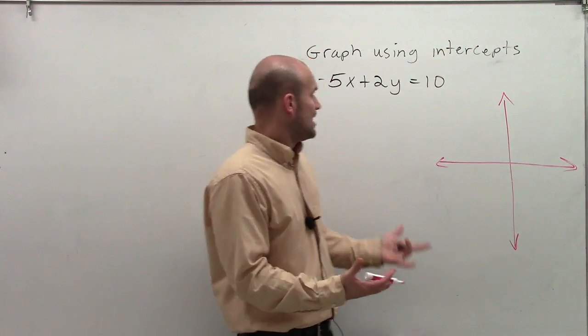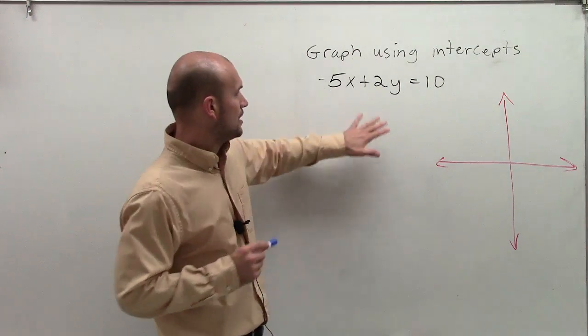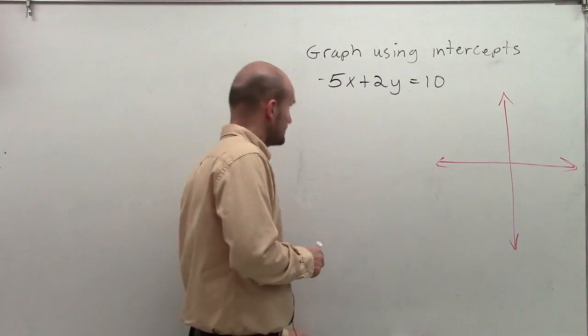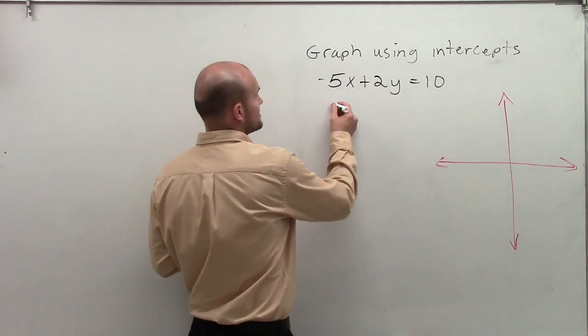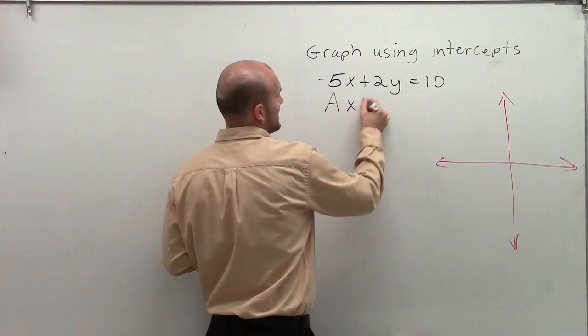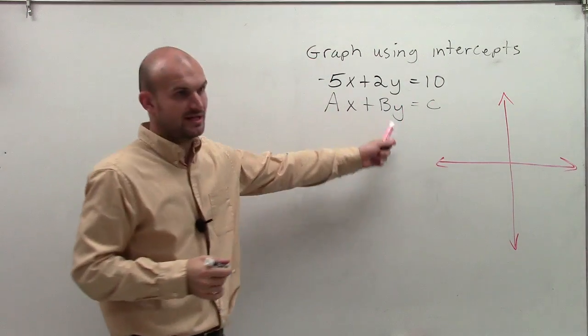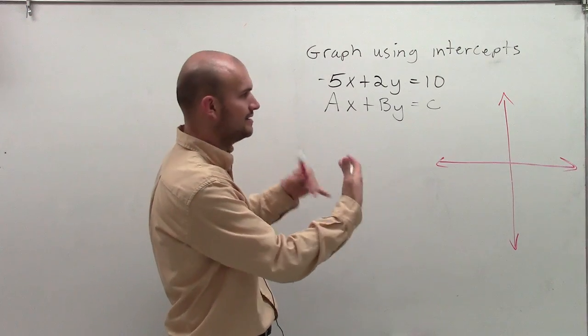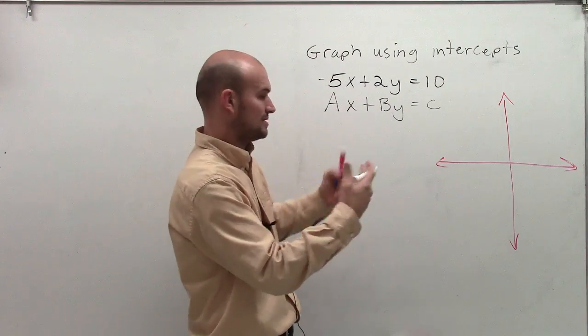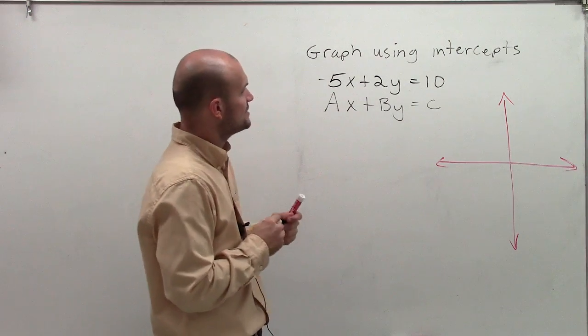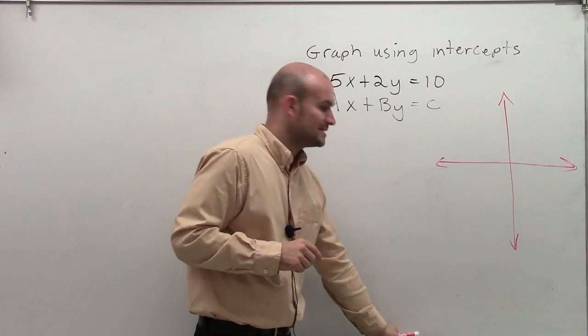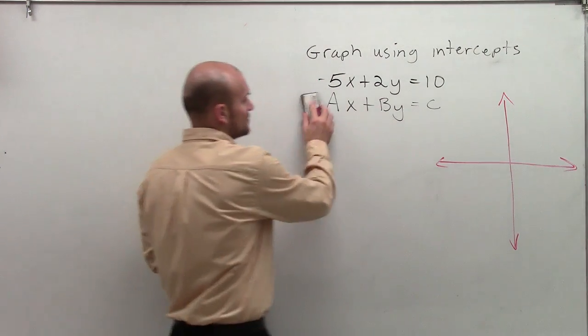So one way to graph, especially when we have an equation in the standard form - FYI, this is standard form. Any time you have ax plus by equal to c, that's what we call standard form. So when you have your variables on the same side and it's equal to c, we call it standard form. So when you have an equation in standard form, one way to do it is to graph by finding the x and y-intercepts.